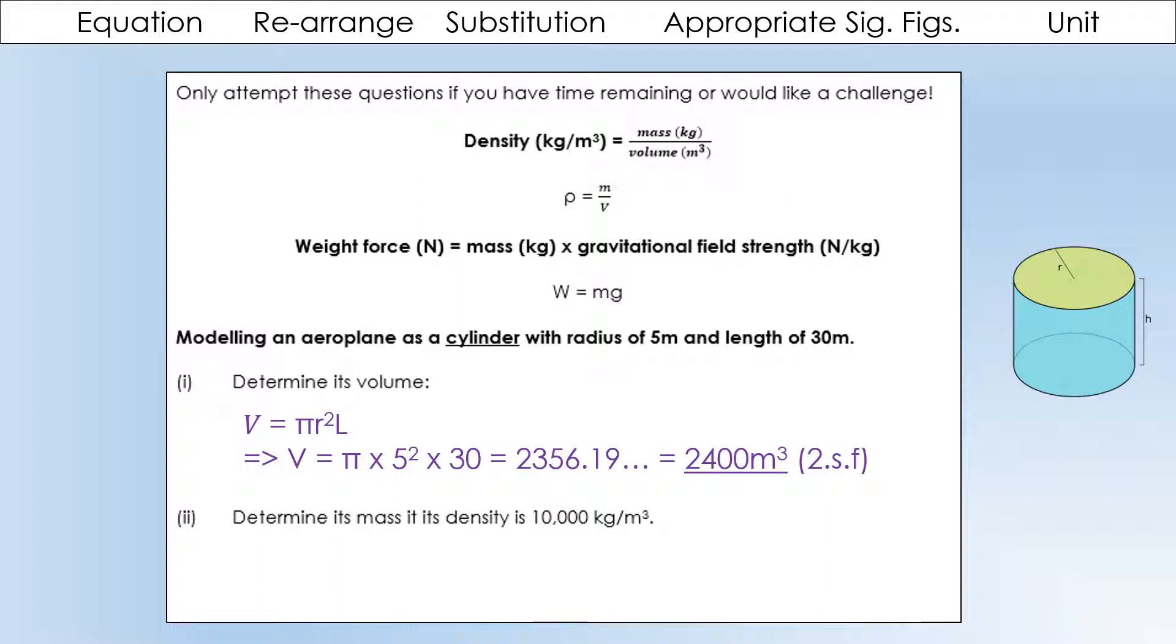Determine its mass if its density is 10,000. So, this is our density equation. We want to get mass, so we multiply both sides by volume. Then we plug our numbers in. We've got our density, we've got our volume, because we've just calculated it. And that gives us our mass. So, you can see our plane mass is very, very big. Possibly bigger than a real plane would be by quite a long way. But I think we've overestimated our density and our volume just a little bit. But let's ignore that for now.